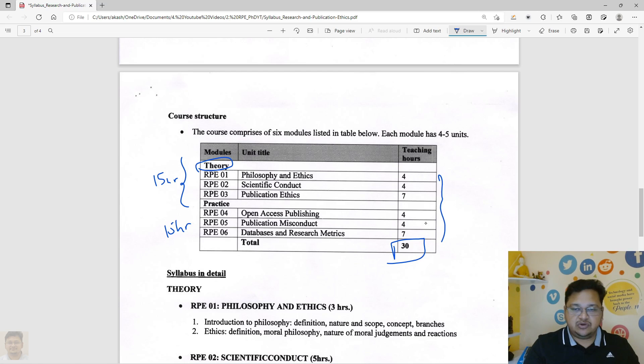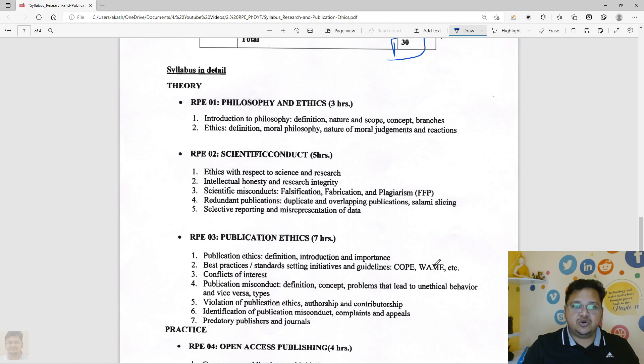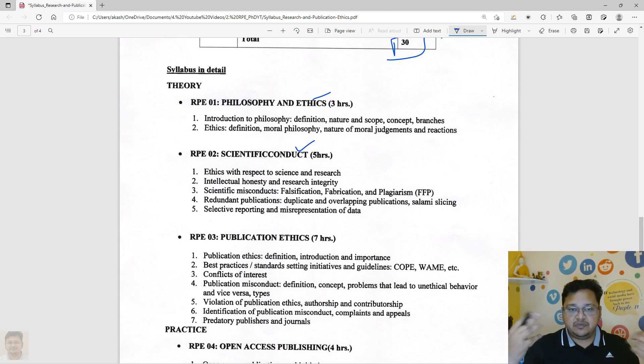Basically this first module, as you can see, is Philosophy and Ethics. I'll be covering it quickly. Then the scientific conduct where there are many components to research misconduct like falsification, fabrication, the plagiarism that we talk about.